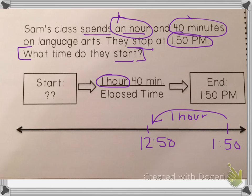Then I need to go back another 40 minutes. So 50 minus 40 is 10. So that would be at 12:10. So that's 40 minutes.